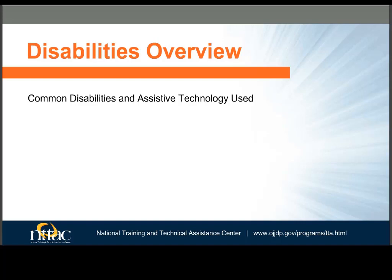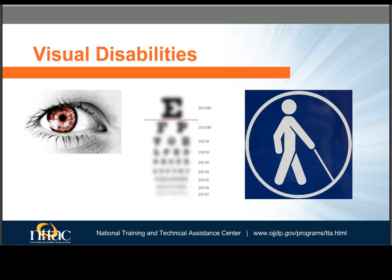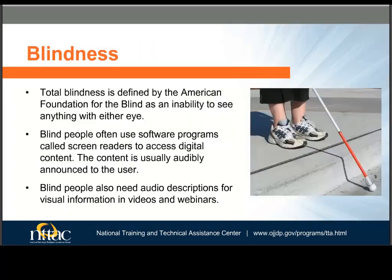Who is Section 508 written for? Following are common disabilities that could be impacted when ICT is not accessible. Visual impairments range from color blindness to low vision to complete blindness. According to the National Center for Health Statistics, it is estimated that 21 million American adults have some sort of visual loss. Blind people use screen readers, which typically announce what is on the screen but can also send the information to braille devices. Blind people also cannot see the action in a video; when it is important and not described in the dialogue or narration, they will need it described in a separate audio track.